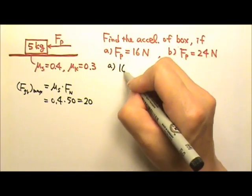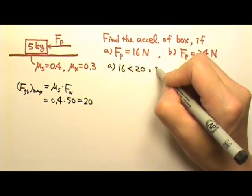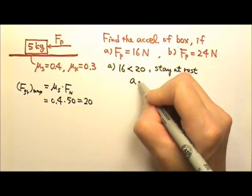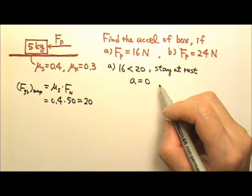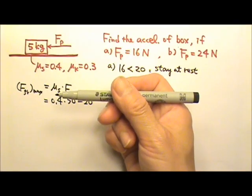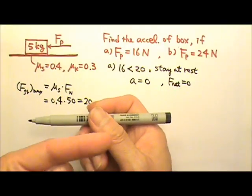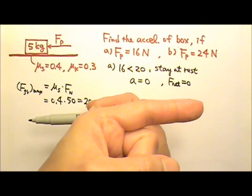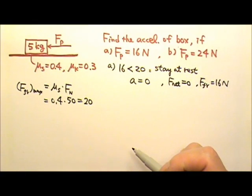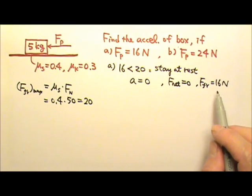Now for part A, the 16 newtons is less than 20. That is not enough to make the box to begin moving. So the box is going to stay at rest, which means the acceleration will be 0. Now I did not ask you to find the friction, but if you have to find the friction, since you push with 16 newtons and there is no acceleration, the net force has to be 0. That means your pushing force must be canceled by the friction exactly. So the friction must be 16 newtons, not 20, because the 20 is the maximum possible static friction. The real static friction can be less than 20.